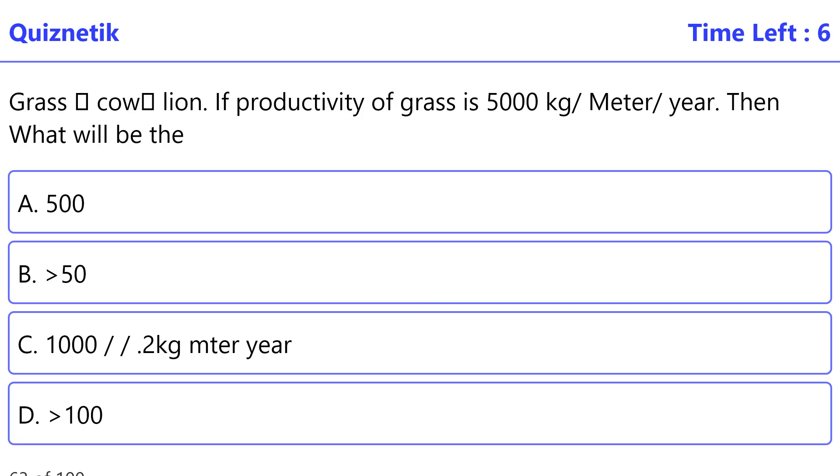If productivity of grass is 5,000 kg meter year, then what will be the dot productivity of lion in general? The correct option is B, 50.